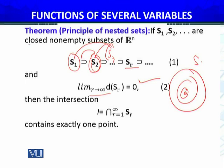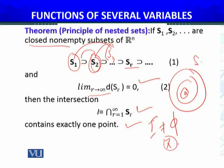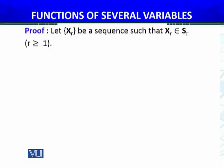अब इन subsets का — जो कि closed non-empty subsets हैं — इन subsets का intersection लें, तो that intersection contains exactly one point। यह I non-empty set है, और इस set में सिर्फ एक ही point है, जिसको X-bar बनाऊंगा — कोई और point हो ही नहीं सकता। इन दो steps में मैं इसको साबित करूँगा।